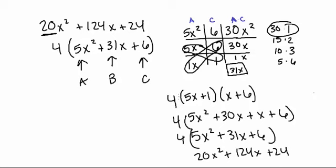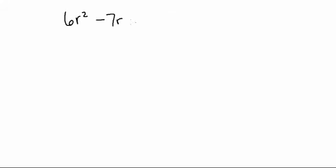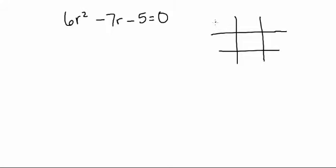Hopefully that example was helpful. I'm going to do one more problem. This one is 6r squared minus 7r minus 5 equals 0. This is slightly different because it's set equal to 0 and asks you to solve. However, in order to solve it you're going to have to factor it just like we did before and then set both resulting terms equal to 0. First, check for common factors — in this case there are none, so we jump right into the tic-tac-toe method. I'll put the a term 6r squared here, the c term negative 5 here, and multiply them to get negative 30r squared.